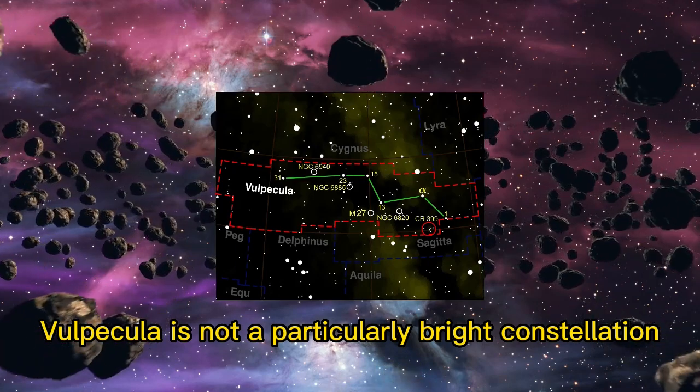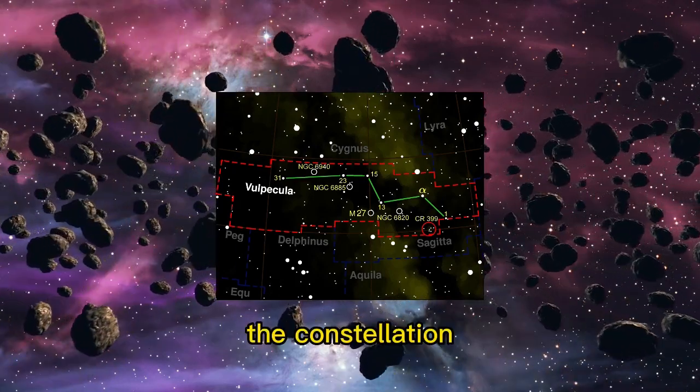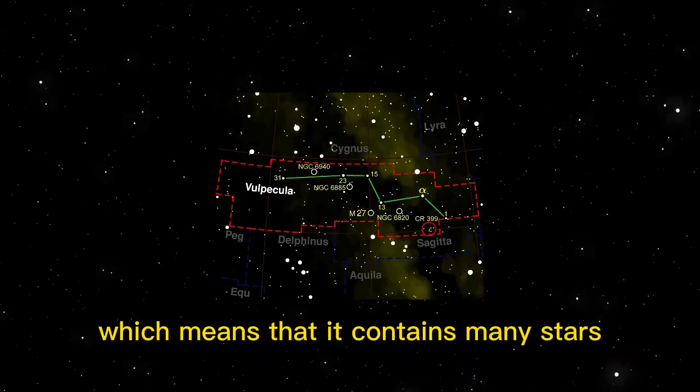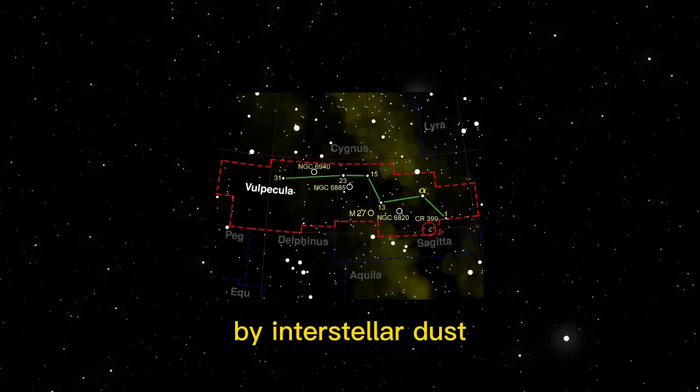Vulpecula is not a particularly bright constellation, with no stars brighter than fourth magnitude. The constellation is located close to the plane of the Milky Way, which means that it contains many stars and deep sky objects that are obscured by interstellar dust.